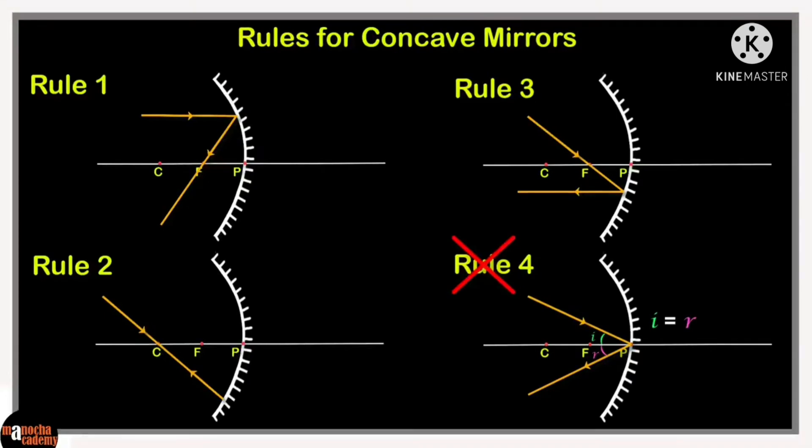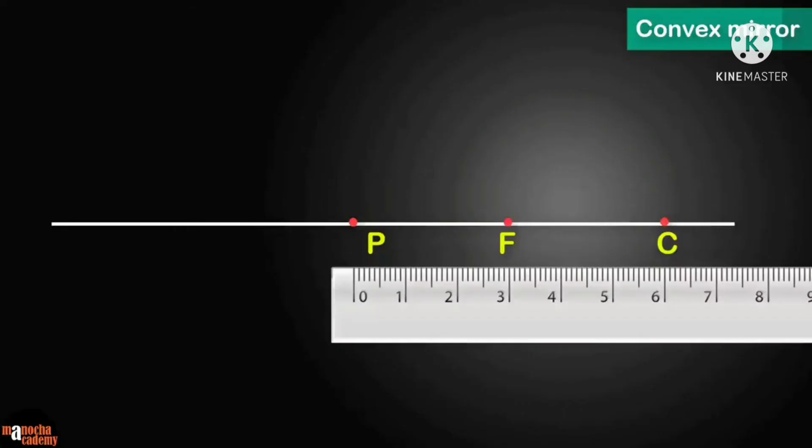This is our concept board. So out of these four rules, we are using only three rules. Why? Because we need only two rules that are convenient for the diagram. Now an important note: avoid the fourth rule for convex mirrors.